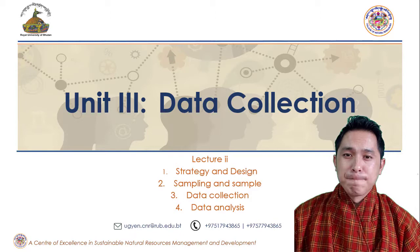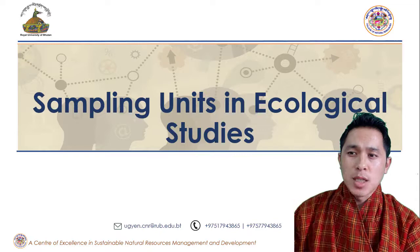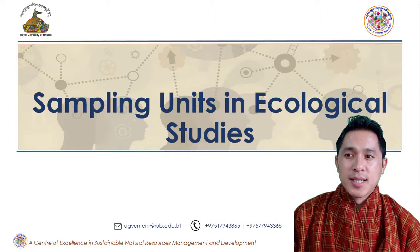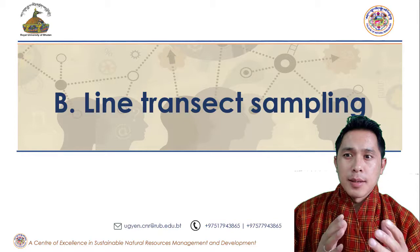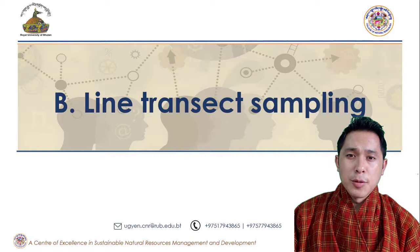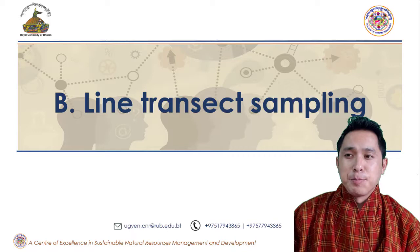We just saw what quadrants are and how to use them, and what quadrants can let us find. Now let us look at another sampling unit that is a plotless sampling unit. Specifically, we're going to look at transects. Transects are basically a line or a path where we can walk and observe species to the left and right that we are interested in.